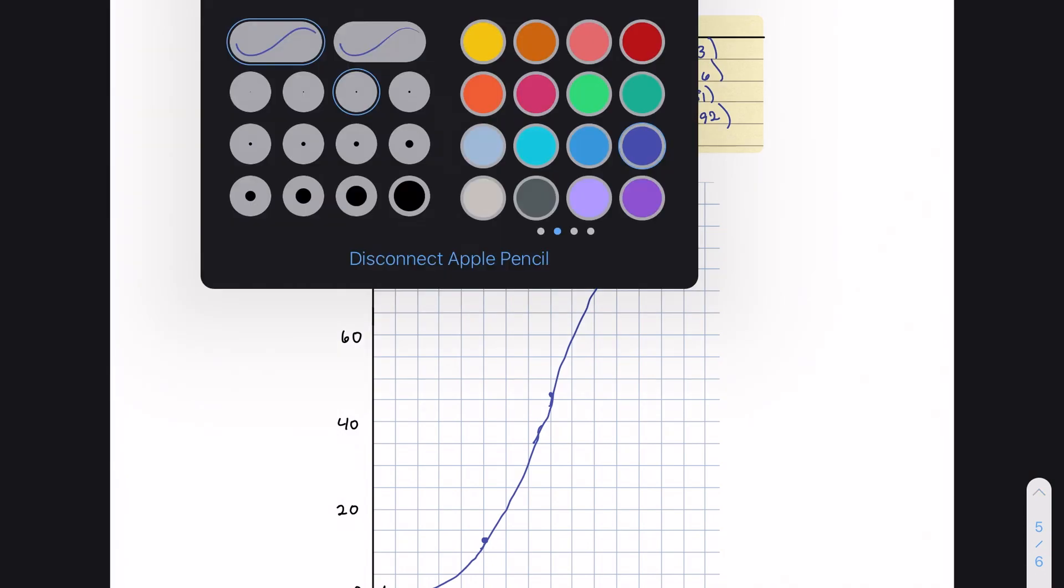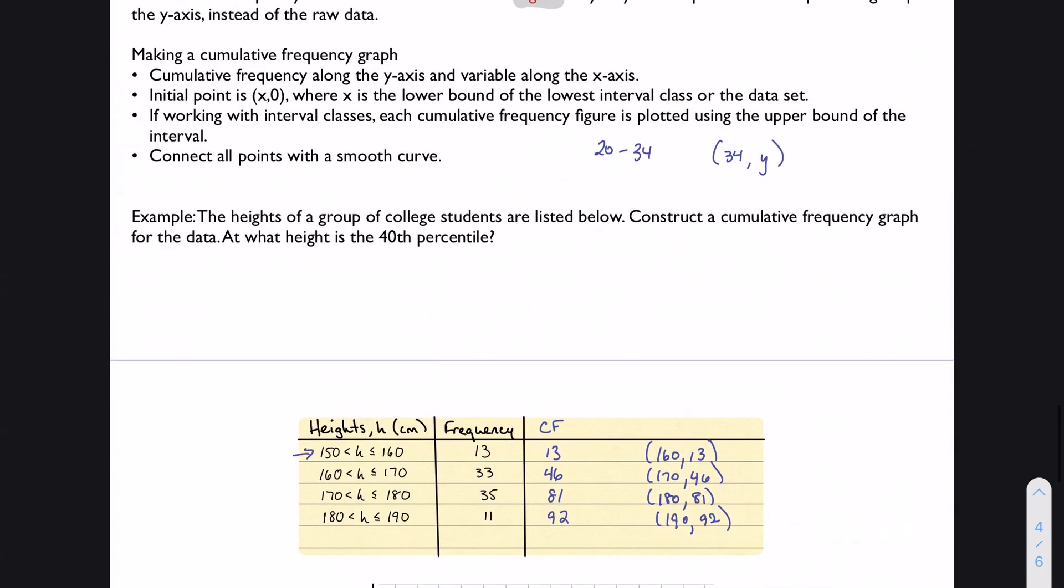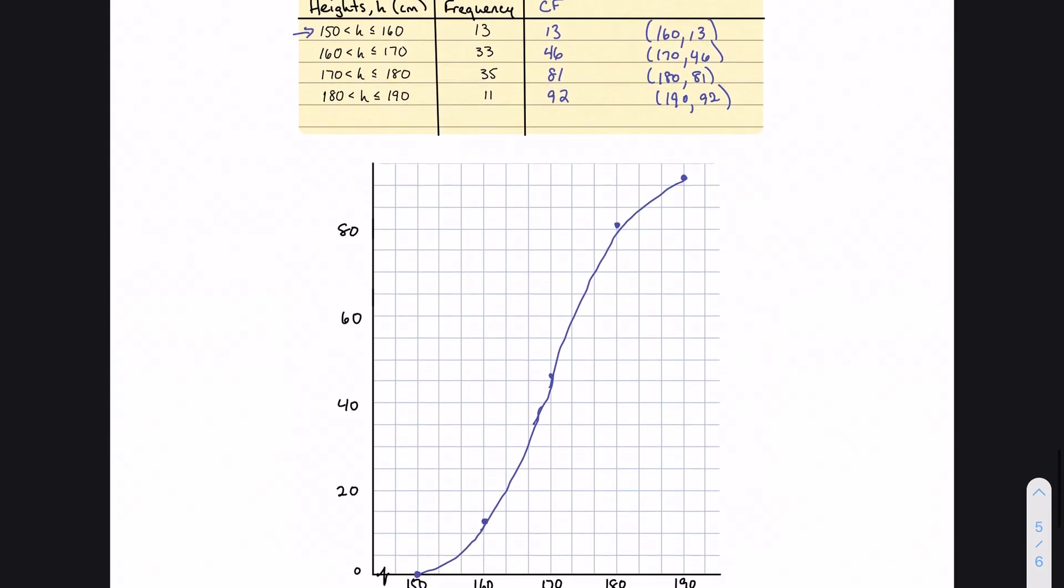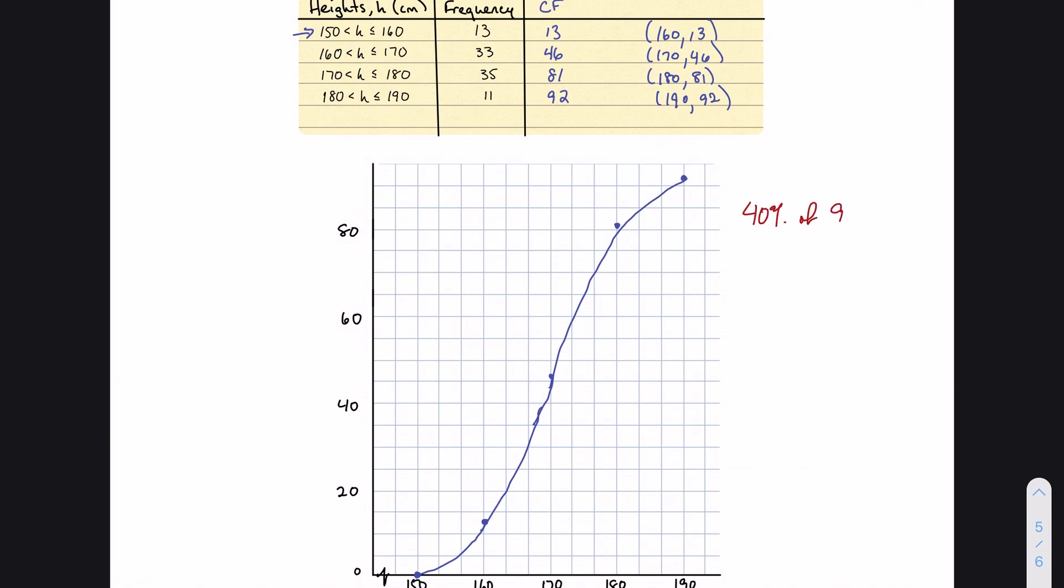The rest of this problem asked for the 40th percentile. So 40% of my number of students is 36.8, which is not a nice round number of students, but we can work off of it and eyeball it. So 36.8 is probably here-ish. So if I trace this downwards, I'm going to get maybe 167.5. So the 40th percentile is approximately 167.5 centimeters, and that's to say that 40% of the students are that or shorter. So that's all I'm going to do with that cumulative frequency graph.